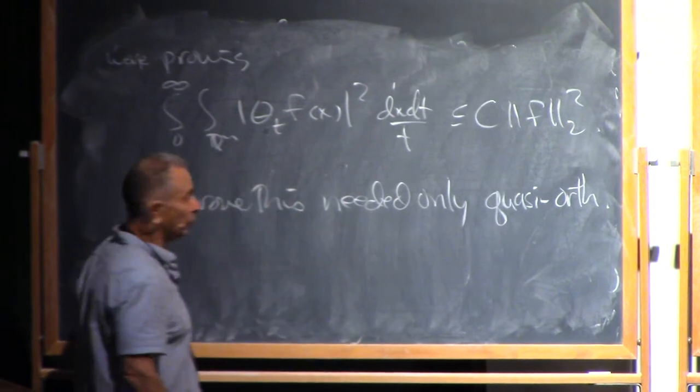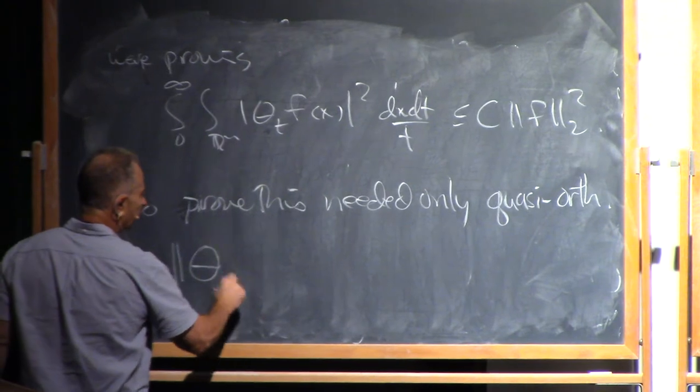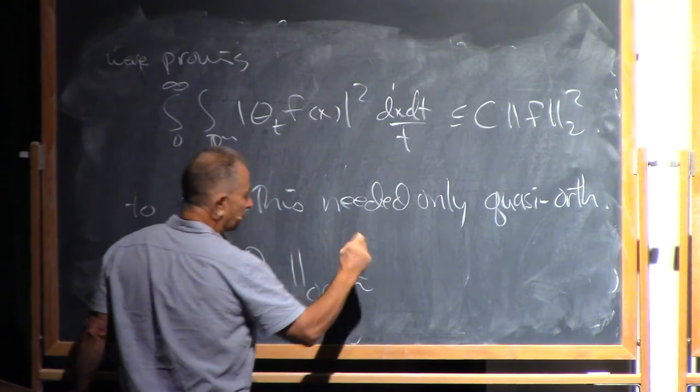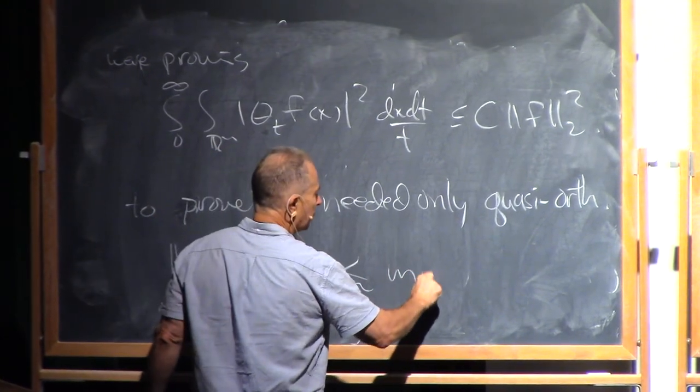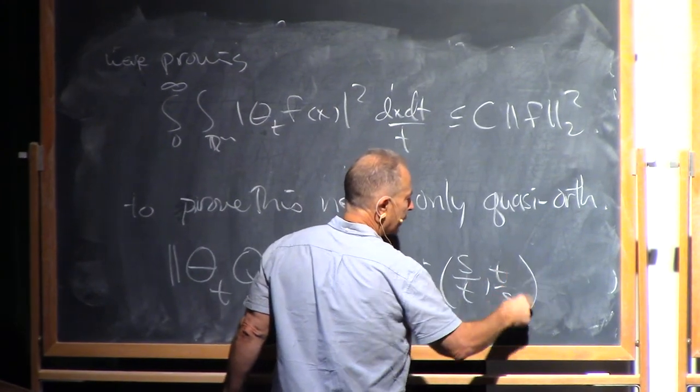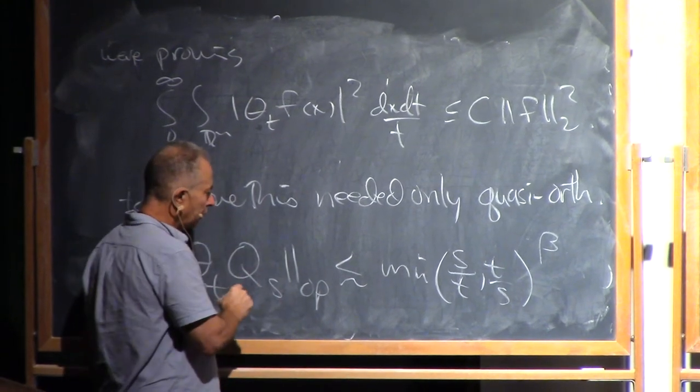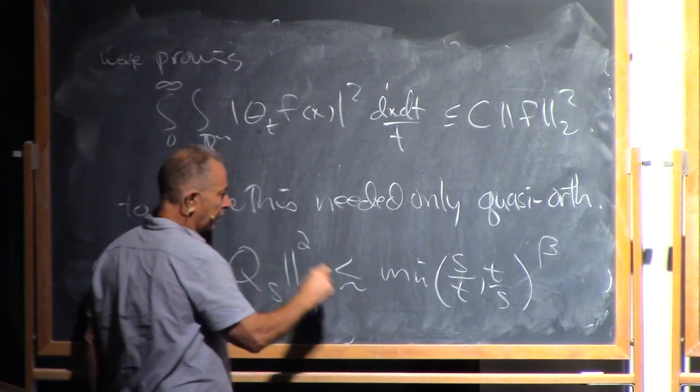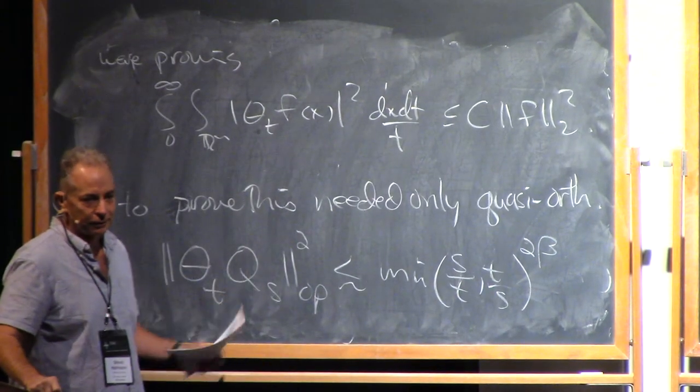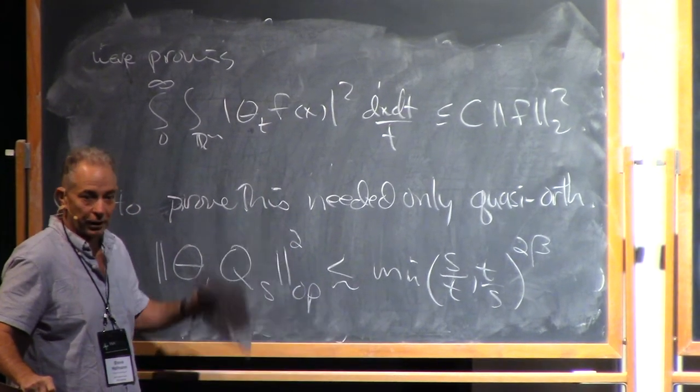Theta t, which, let me remind you, said that in the operator norm, theta t Q_s up to some constant was less than or equal to the minimum of s over t, t over s, to some positive power beta. Let me write it this way, because that's actually how things arose in the proof. We got the square of the operator norm.